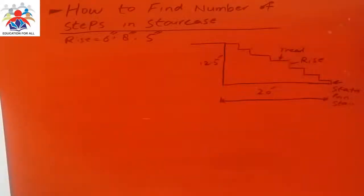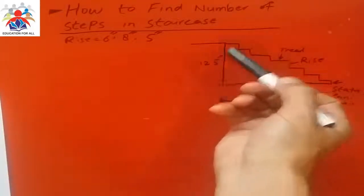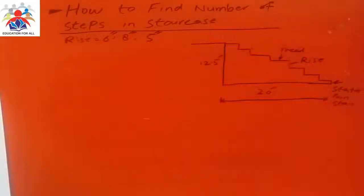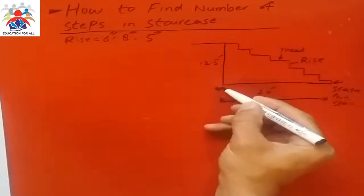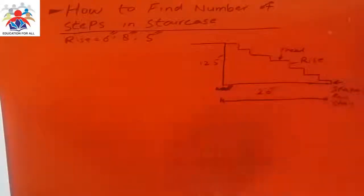This is a structure of stairs as I have drawn in the diagram. So we have 12.5 feet to climb up to go to the second floor. This is a point where we are going to start our stairs and this is a wall. This is the starting point of our stairs.